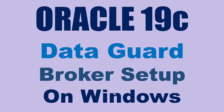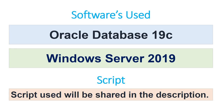Hello everyone. In this tutorial we will learn how to set up the Data Guard Broker on a Windows environment. This tutorial is done on Oracle 19c. The software used is Oracle Database 19c and Windows Server 2019, and the scripts used will be shared in the description.